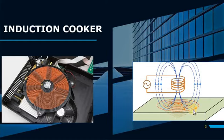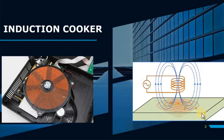Since this metal block is very thick, and current always chooses low resistance paths, it will make many loops of current — many circles, many loops of current will be formed in the metal block. Since this metal block is very thick, it has very low resistance, so this current will be very high. That current induced in this metal block will heat up the metal very fast.